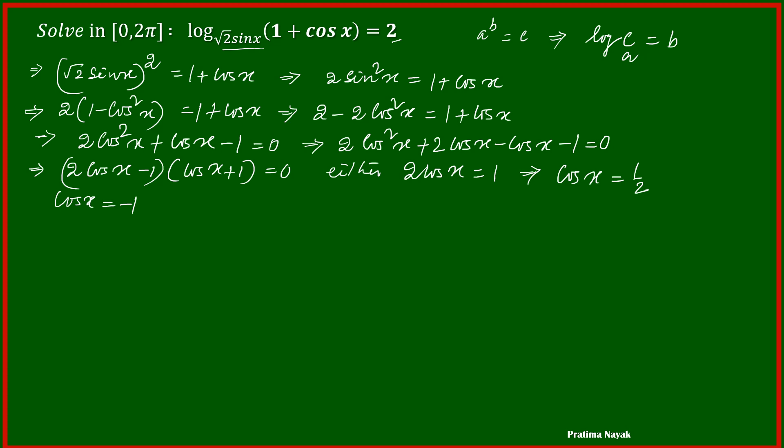Now let us check the solution, whether both will be the solution or anything will be rejected. Coming to the first one, cos x is equal to half. The value of x is in between 0 to 2π. We know this is half is either π by 3, or it will be positive in the fourth quadrant, that will be 2π minus π by 3. These are the two values.